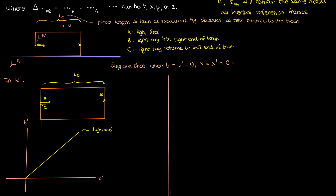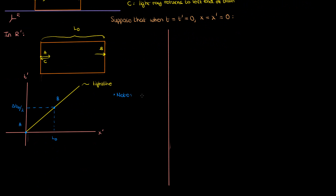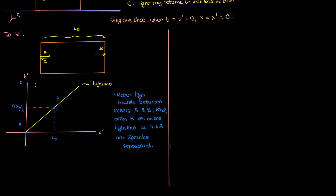I'll suppose that event A starts exactly as the clocks of the two reference frames R and R' synchronize and those frames line up, so in the spacetime diagram A starts at the origin. Event B is when the light ray hits the right side of the train at x' equals L0. We'll suppose the ray of light takes a time delta t0 over 2 to reach event B. Notice that B lies on the light line since it's a ray of light traveling between A and B, making A and B light-like separated. Event C occurs when light travels back to the left end of the train at x' equals 0. To travel back the ray of light takes the same time delta t0 over 2, since it travels the same distance L0 at speed c.